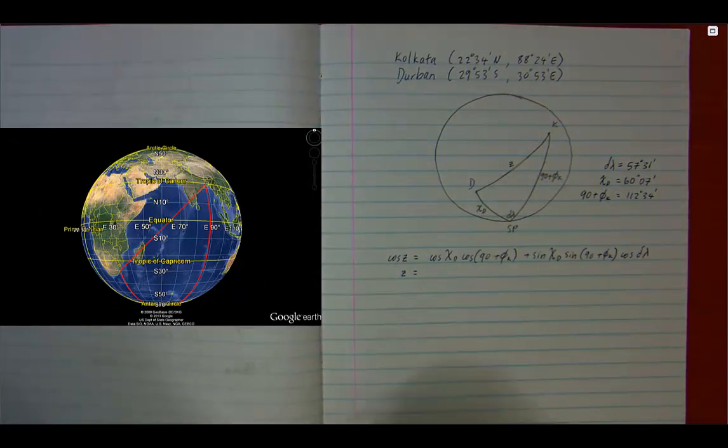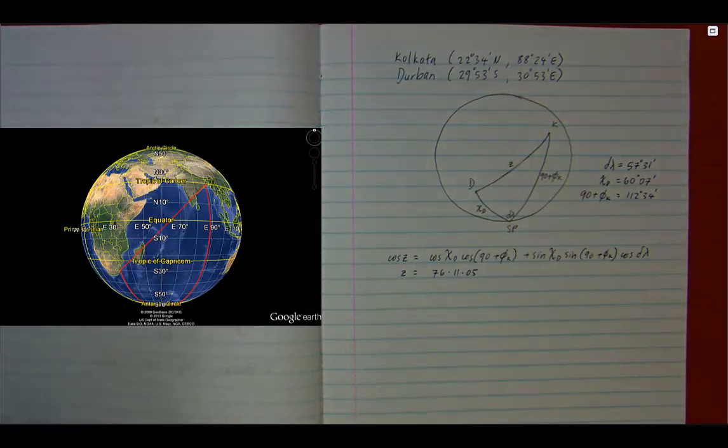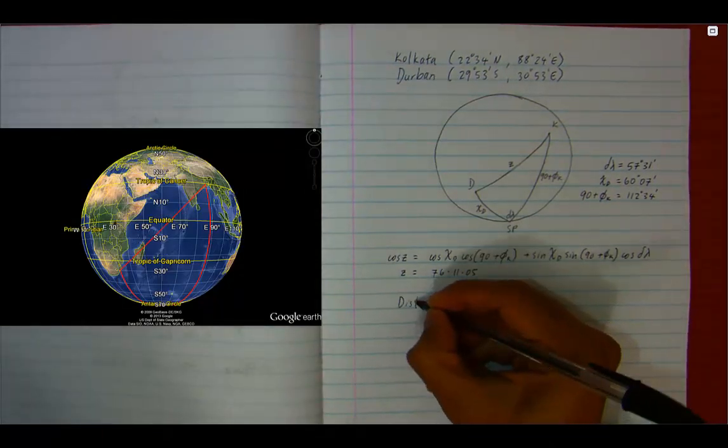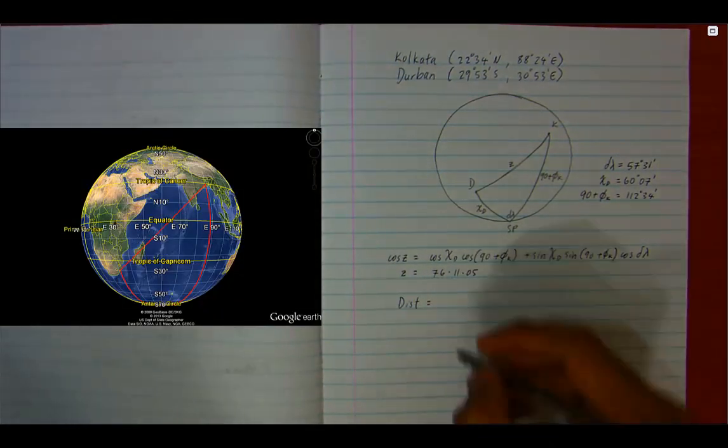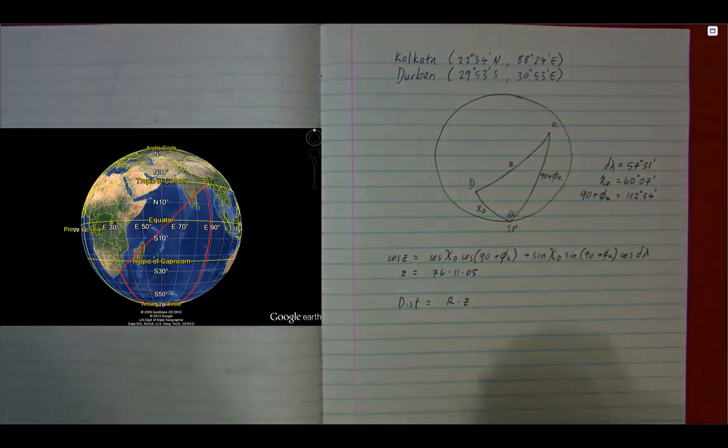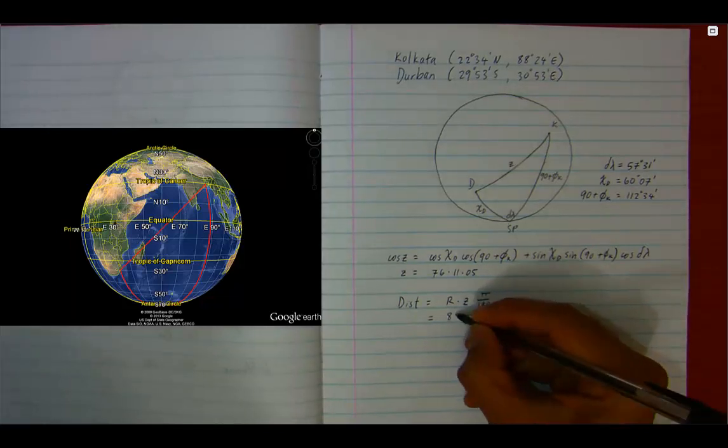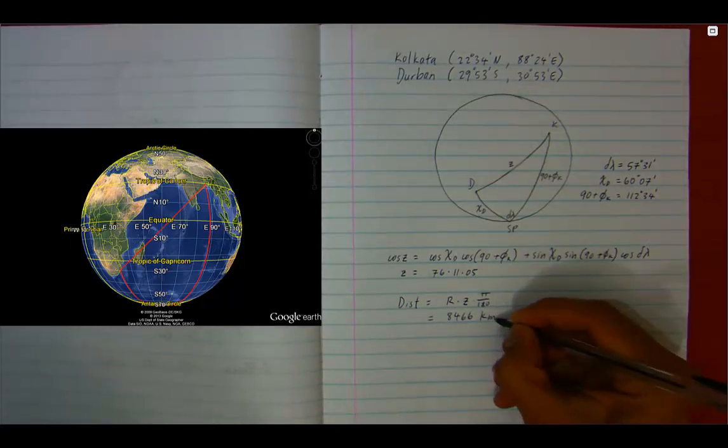z works out to be 76 degrees, 11 minutes and 5 seconds. To convert z into a distance in kilometers, I convert it first into radians and then multiply it by the radius of the earth in kilometers, which works out to 8,466 kilometers.